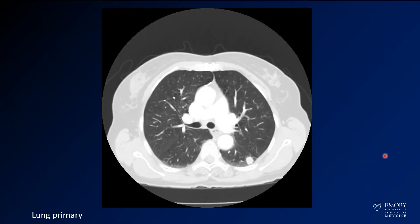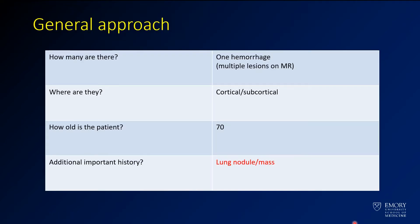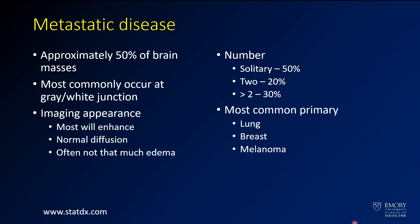In this case we have a chest CT. They have a mass here in the left lung. So this is concerning for a primary malignancy, which makes this much more concerning for metastatic disease. This is a case of metastatic disease.